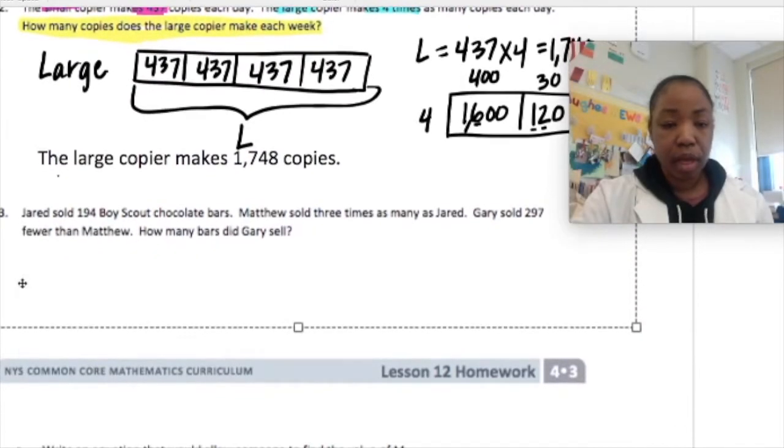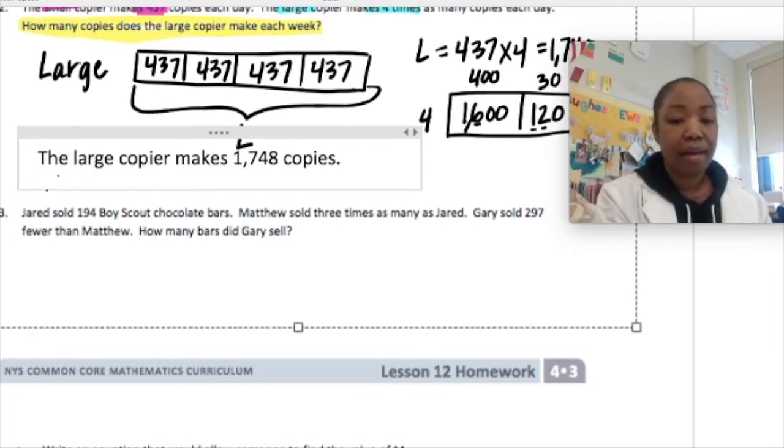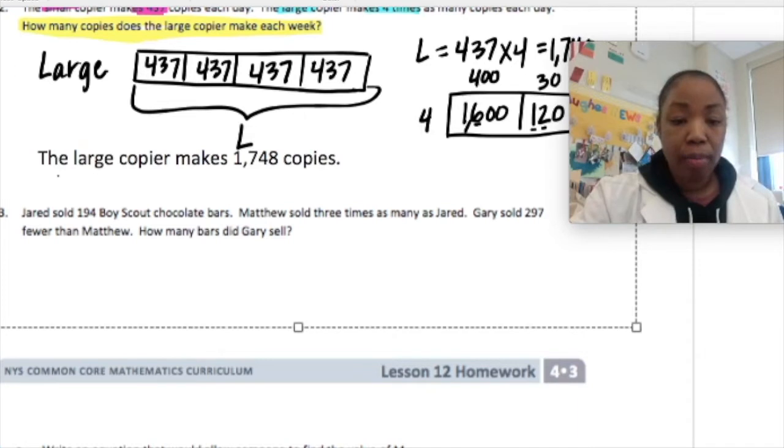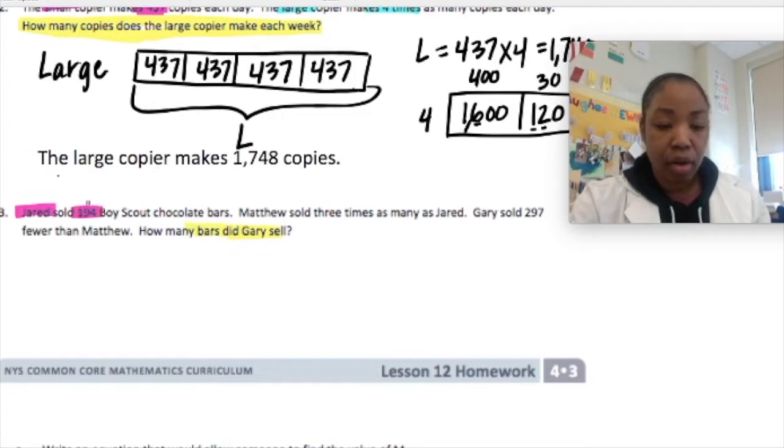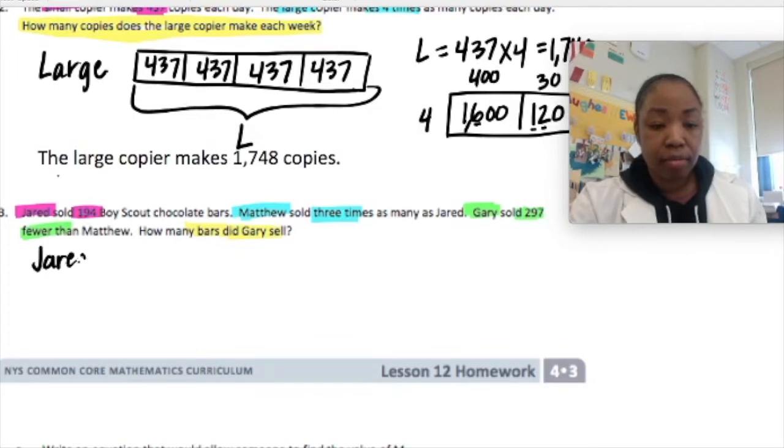Number 3. Jared sold 194 Boy Scout chocolate bars. Matthew sold 3 times as many as Jared. Gary sold 297 fewer than Matthew. How many bars did Gary sell? They give us a lot of information. They want to know how many bars, that's the units, Gary sells. They tell us exactly what Jared sold. He sold 194. Matthew sold 3 times as much as Jared. And Gary sold 297 fewer than Matthew. So, let's do a tape diagram for Jared, Matthew, and Gary.